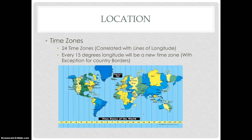There are 24 time zones, correlated with lines of longitude — every 15 degrees of longitude marks a new time zone, with exceptions for country borders. One notable exception is China: if geographers strictly used the 24 longitude lines, China would have five different time zones, but instead the time zone wraps around China to make domestic trade and travel more convenient.